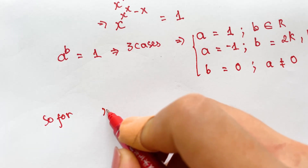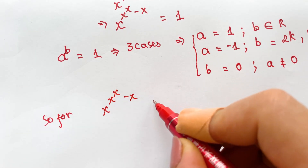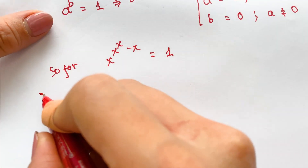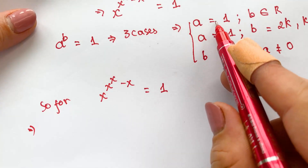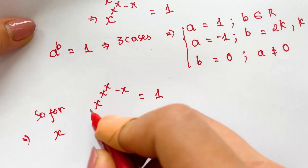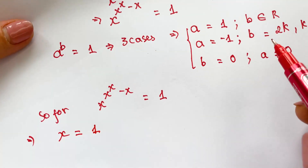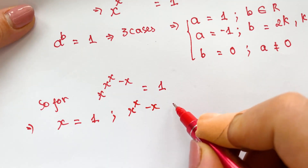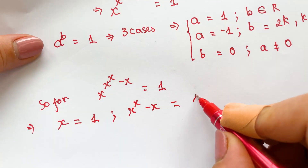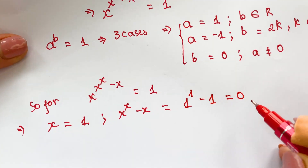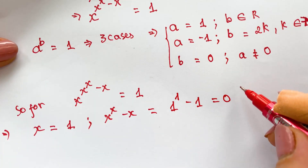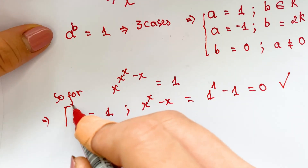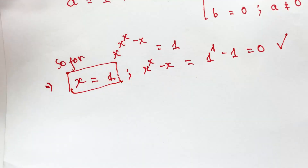Applying these cases to x^(x^x - x) = 1: for Case 1, a = x = 1. We check the power: b = x^x - x = 1^1 - 1 = 0, which is acceptable since b belongs to the real numbers. So x = 1 is a solution.